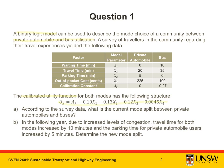The question contains two parts. Part A: according to the survey data, what is the current mode split between private automobiles and buses? Part B: in the following year, due to increased levels of congestion, travel time for both modes increased by 10 minutes and the parking time for private automobile users increased by 5 minutes. Determine the new mode split.